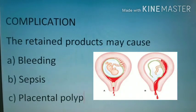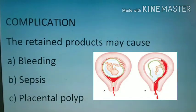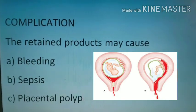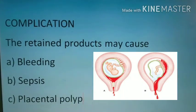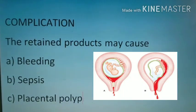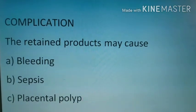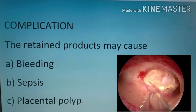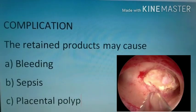Next are complications. The retained products may cause bleeding, because the retained products in the uterine cavity prevent the uterus from contracting properly, so the blood vessels inside the uterus will continue to bleed. Then sepsis can occur. Then placental polyp — it is a retained piece of placental tissue that persistently exists in the uterine cavity.